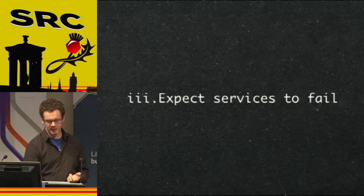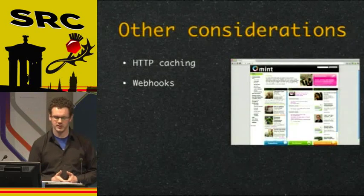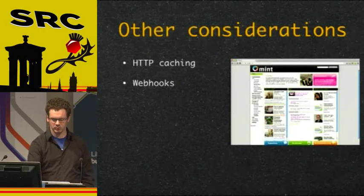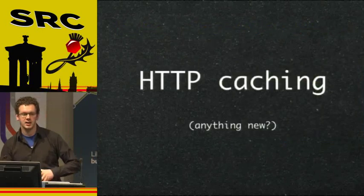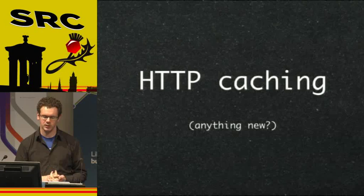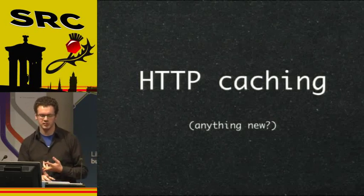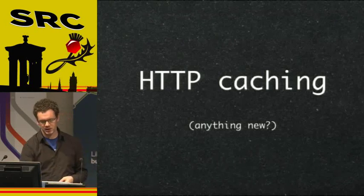I want to talk about some other considerations. These haven't been implemented in Mint yet, but they're on the books for future parts of the intranet. The first one is HTTP caching. Any service-oriented app needs to do some caching, and in a RESTful environment that's HTTP caching. This is done through three HTTP headers: Max-Age, Last-Modified, and ETag.